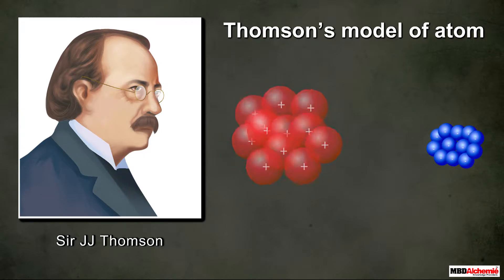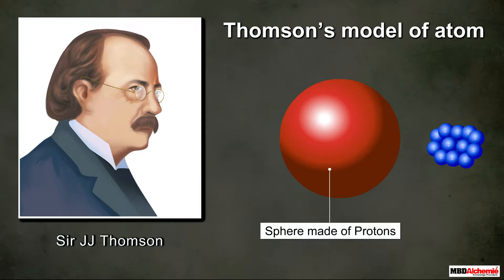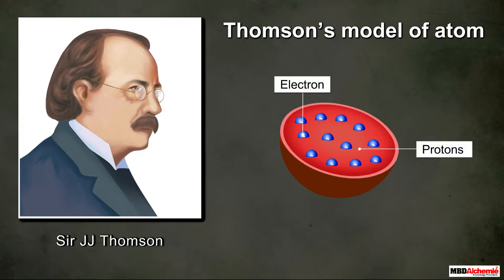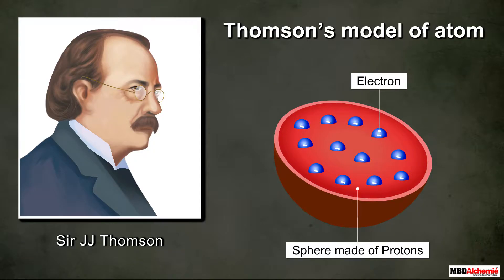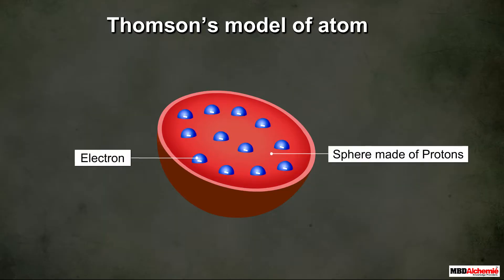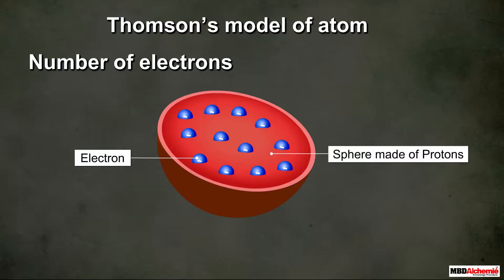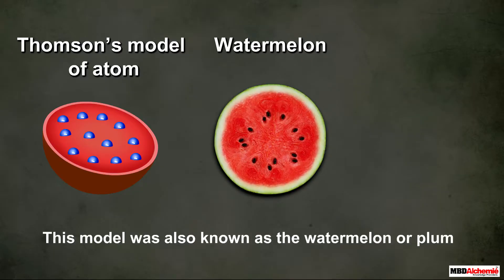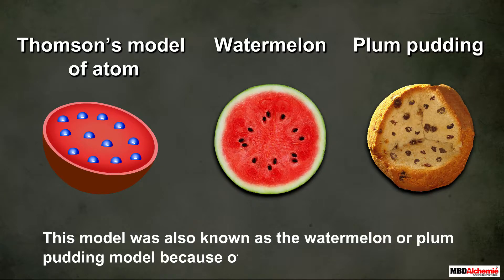Thompson proposed that an atom consists of a positively charged sphere that is made of protons, and all electrons of the atom are embedded in this sphere. Moreover, according to him, the negatively and positively charged particles — in other words, the number of electrons and protons — were equal.